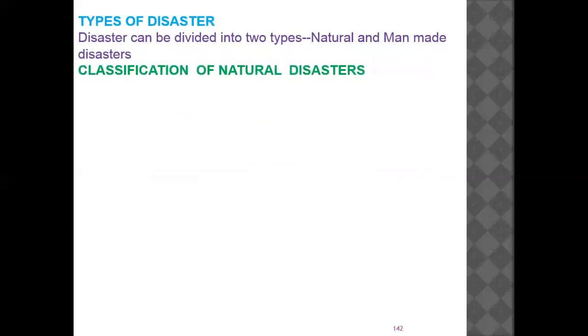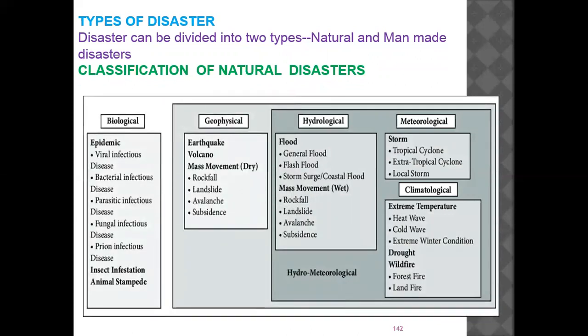What are the types of disaster? A disaster can be divided into two types: natural and man-made. Natural disasters can be classified as biological, geophysical, hydrological, and meteorological. Biological disasters are those caused by biological agents such as viruses, bacteria, or fungi.